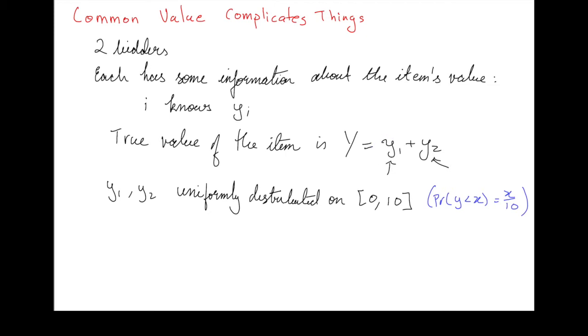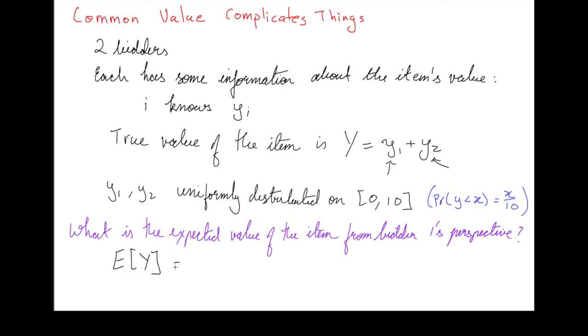Bidder 1 only knows Y1. So from bidder 1's perspective, what does he think the expected value of the item is? Well, it's simply the expected value of capital Y, which is the expected value of Y1 plus Y2. Remember, bidder 1 knows Y1, so Y1 is a constant, whereas Y2 is a random variable from bidder 1's perspective. So it's Y1 plus the expected value of Y2. If Y2 is distributed uniformly over 0 to 10, then the expected value is 5. So that's Y1 plus 5. Similarly, the expected value of the item from bidder 2's perspective is Y2 plus 5.